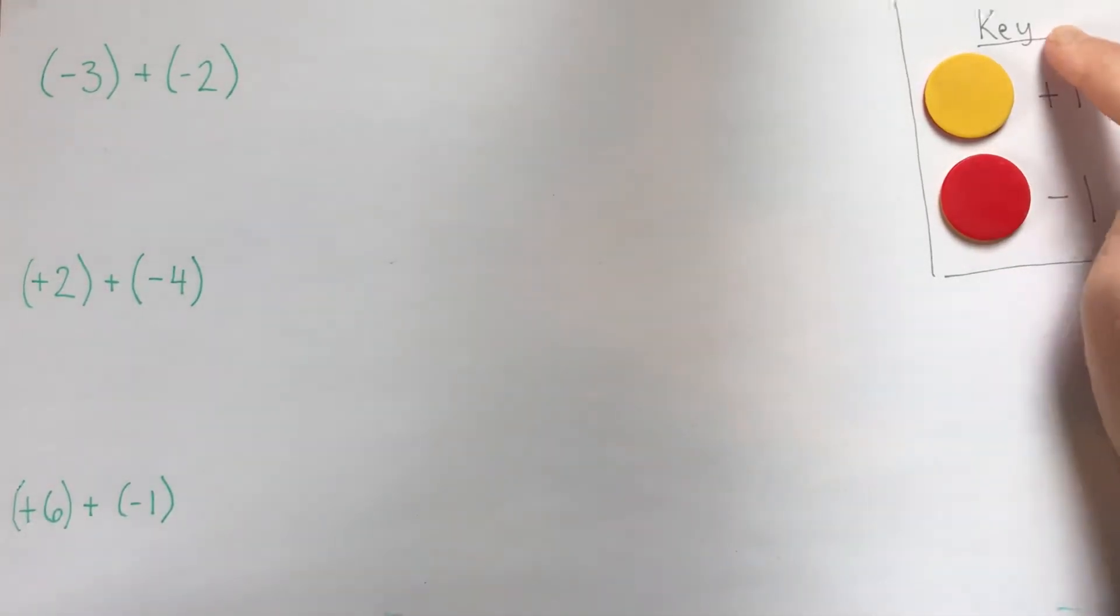That's why it's a good idea to write the key down somewhere on your work, so that you and the people looking at your work all know, and if they forget, they can just double check what represents what.